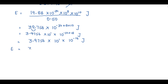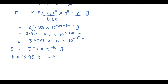Rounding 3.9756 to two decimal places: the third decimal is 5, and the digit to its left (7) is odd, so we increase it by one, giving 3.98. The powers: 10¹ × 10⁻¹⁶ = 10⁻¹⁵. Therefore, the energy of a photon with wavelength 0.50 angstrom equals 3.98×10⁻¹⁵ J.